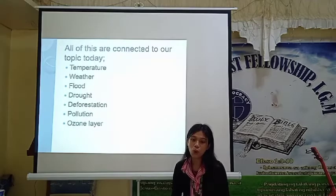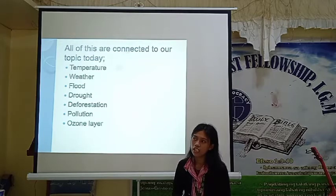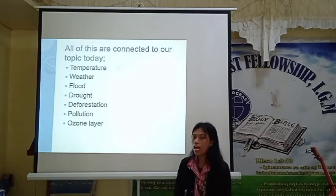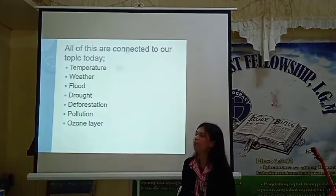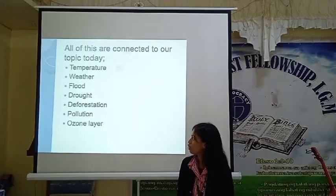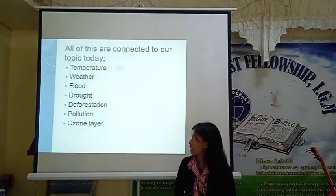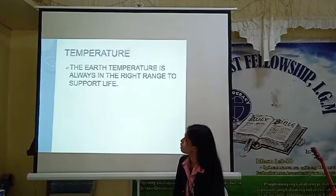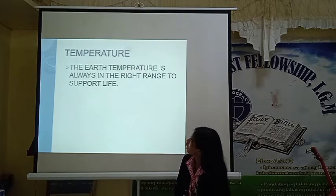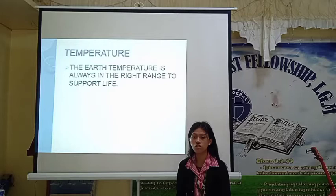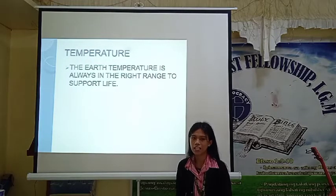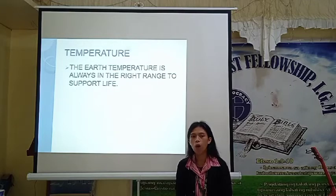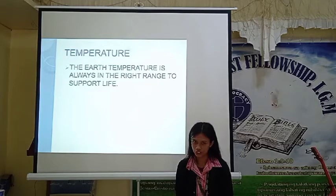Those words we encountered in our activity are connected to our topic — the greenhouse effect. All of these are connected: temperature, weather, drought, deforestation, pollution, ozone layer. Temperature — the Earth's temperature is always in the right range to support life. Temperature is really important for us because it supports life, supports our breathing, and supports how we live on Earth.